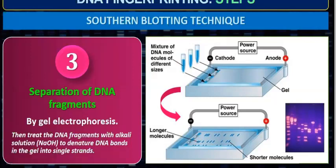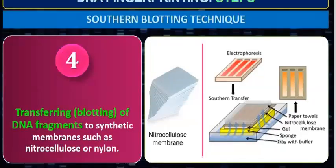So to summarize: first you digest the DNA — converting complex molecules into simple molecules. Then you do separation of the DNA fragments by gel electrophoresis. After treating with the alkali solution NaOH, the double-stranded DNA is converted to single strands. After that, we transfer the DNA fragments to a synthetic membrane such as nitrocellulose or nylon. The DNA molecules present in the gel are transferred to this synthetic membrane.